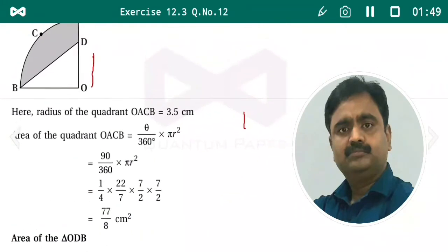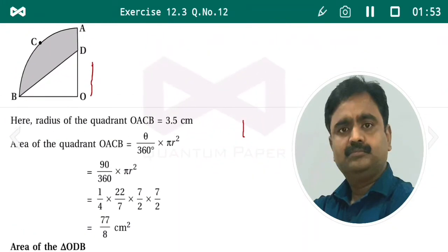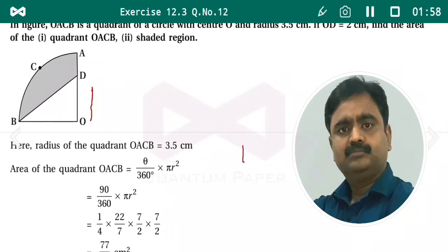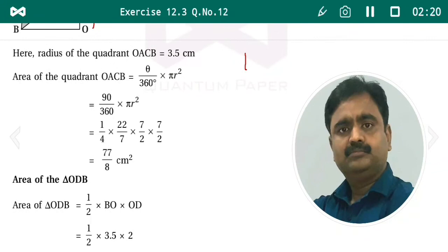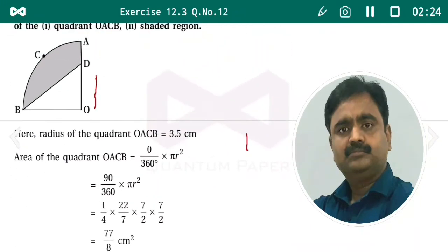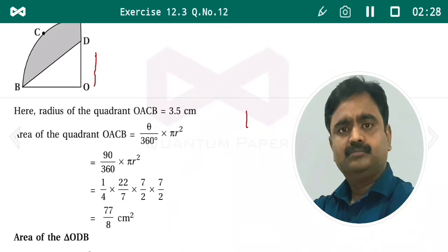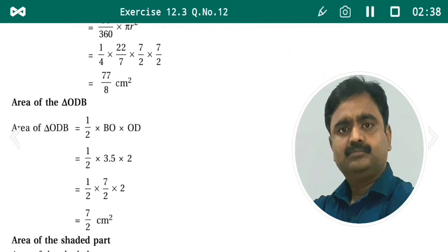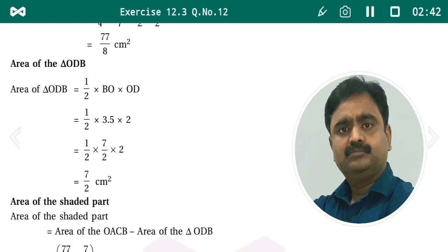Now find the area of the shaded region. To do this, we find the area of triangle OBD and subtract it from the area of quadrant OACB. Area of triangle OBD = (1/2) × base × height = (1/2) × OB × OD. The measures of these two sides are 3.5 and 2, so area of triangle OBD = (1/2) × 3.5 × 2 = 7/2 centimeter square.